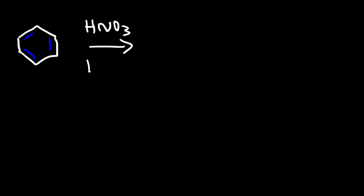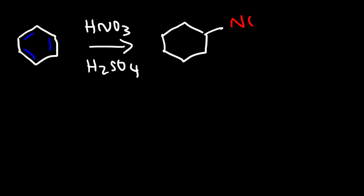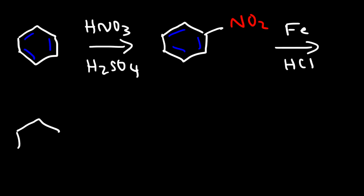Let's start with benzene. The first step is aromatic nitration — we need to install an NO2 group to the ring. Once we have nitrobenzene, our next step is to reduce it. We could use a metal and hydrochloric acid, such as iron metal, and we're going to reduce the NO2 group into an NH2 group.